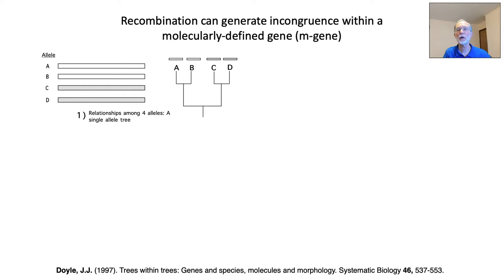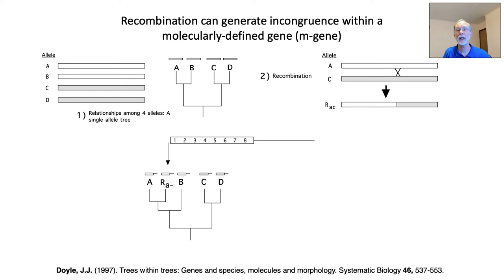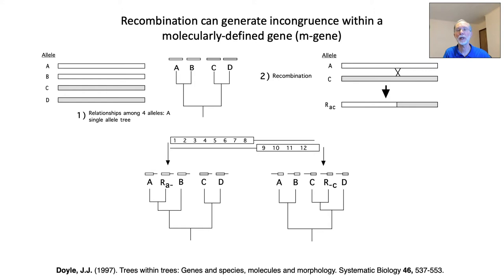A simplified example of Hudson's insight is shown here for a single locus with four alleles, A to D, with a gene tree shown. Recombination between non-sister alleles A and C leads to a recombinant allele. Characters 1 to 8 trace the origin of the 5' portion of the allele to the A allele, whereas the 3' portion of the allele shares a history with allele C. There are thus two different histories, two different C genes, created by recombination.